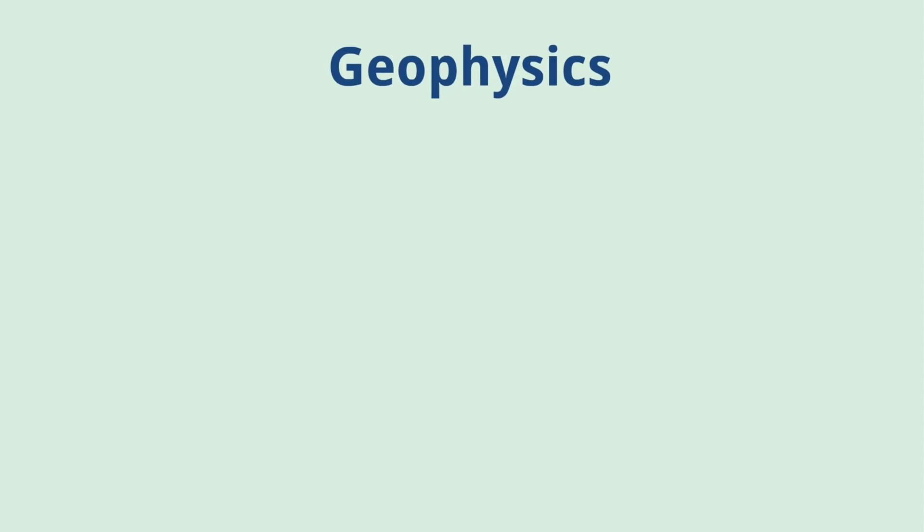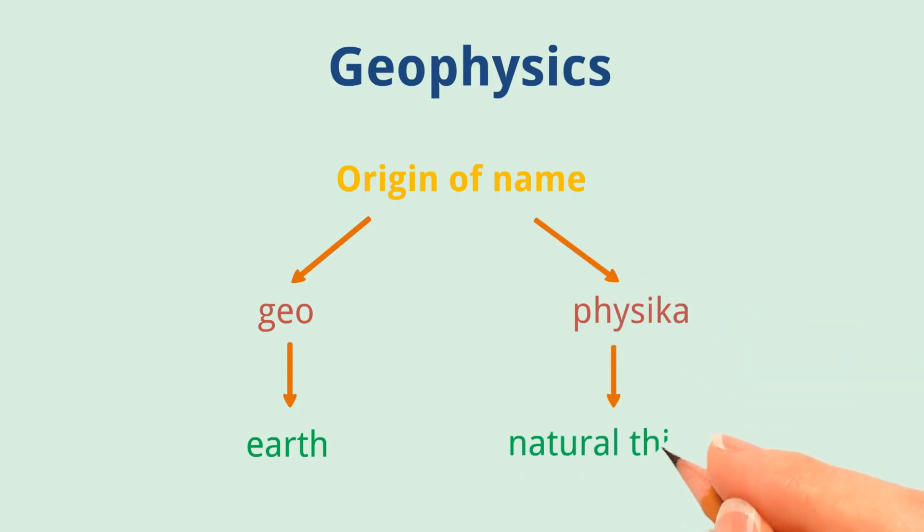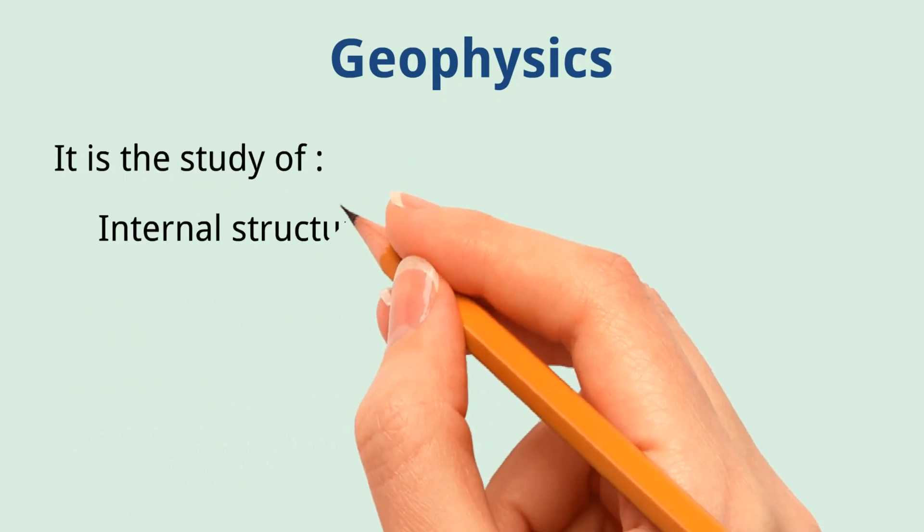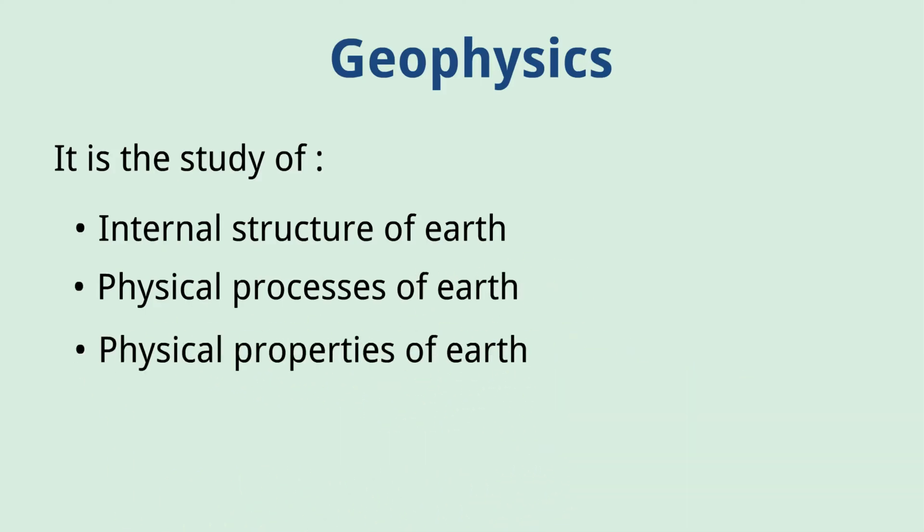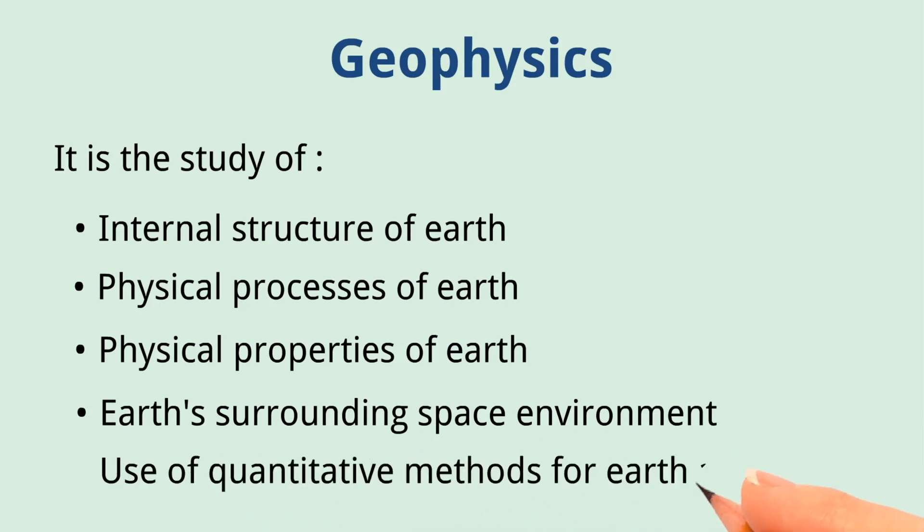Geophysics. Origin of name: The word geophysics is originated from two words, 'geo', means earth, and 'physica', means natural things. It is the study of internal structure of earth, physical processes of earth, physical properties of earth, earth surrounding space environment, and use of quantitative methods for earth analysis.